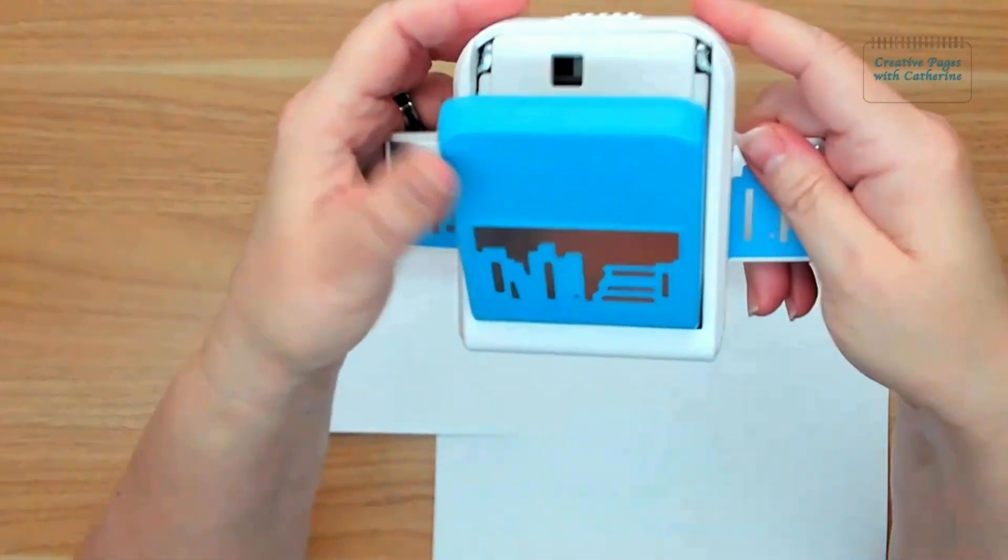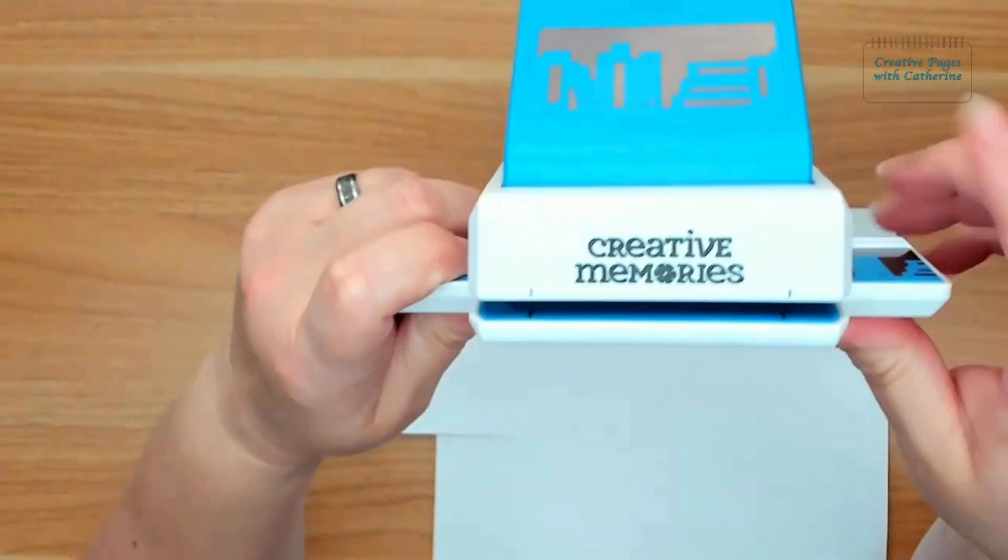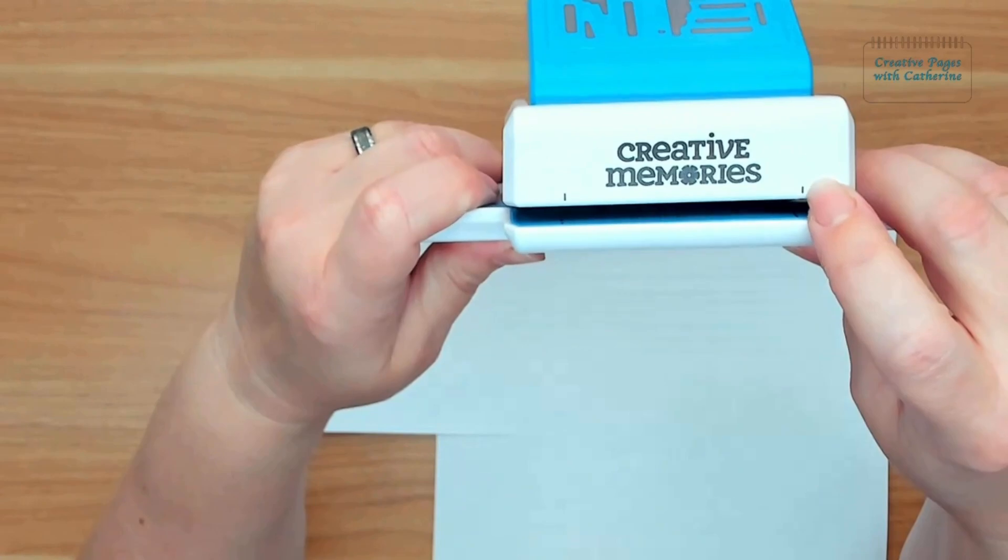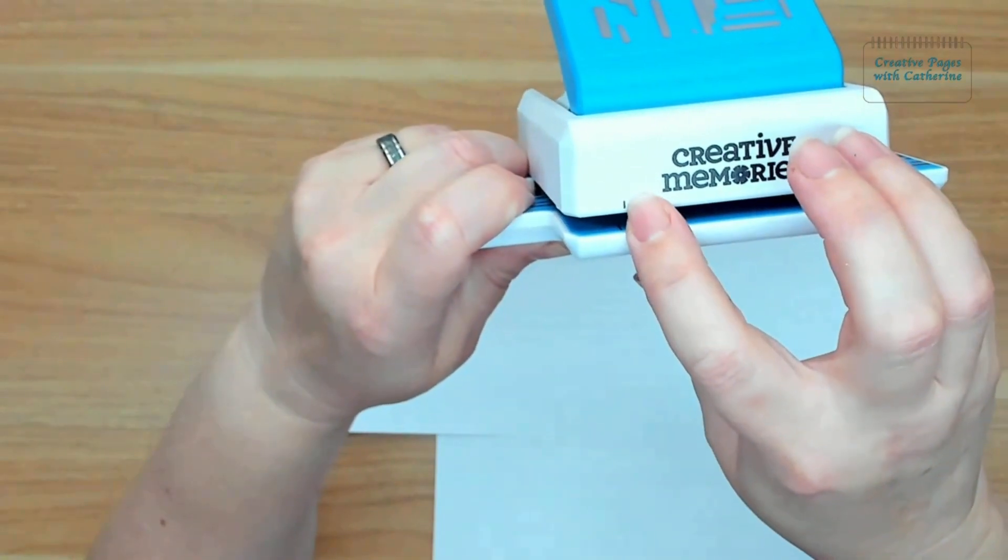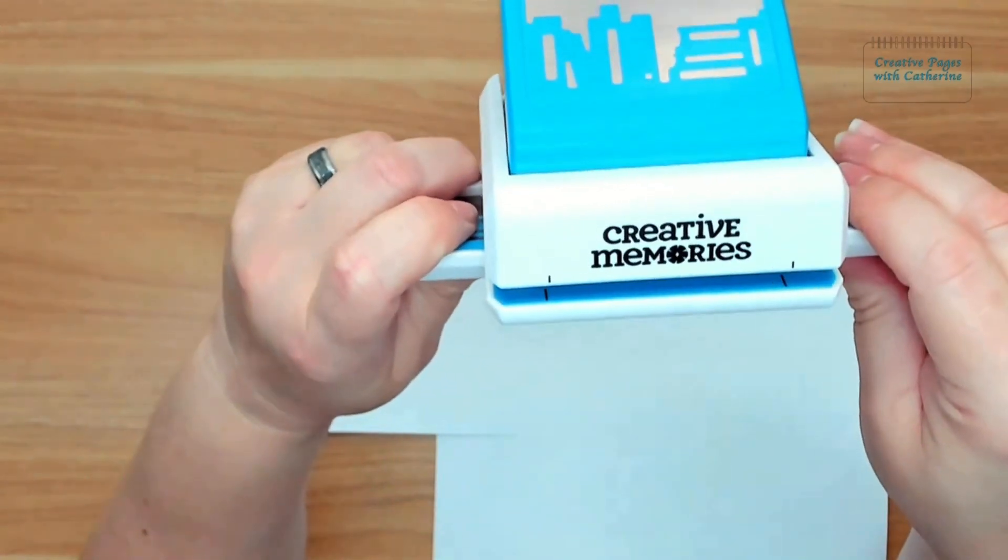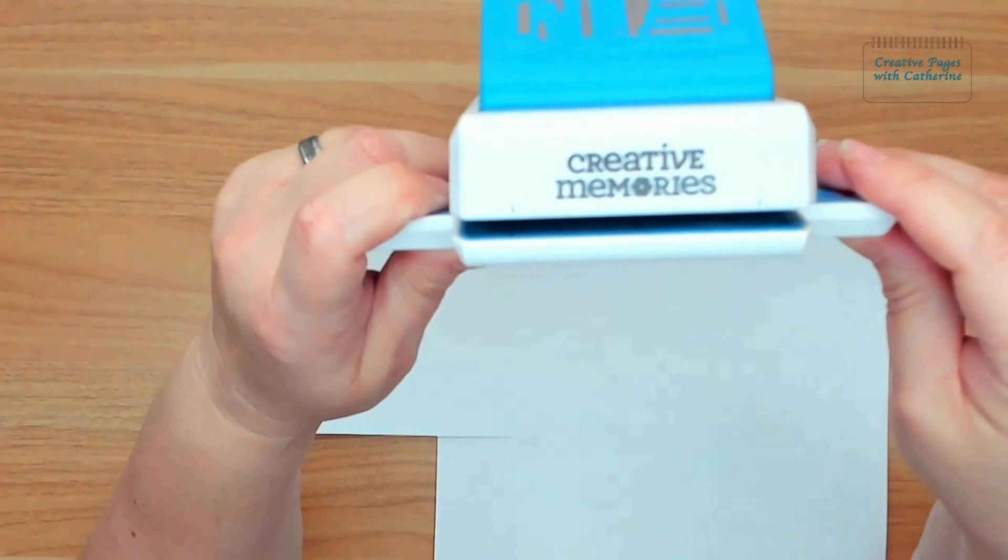I'm going to go ahead and get this one opened up. They also have the black lines right here on either side. That is where you're going to place your paper into your punch when you go to put it in.